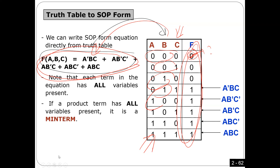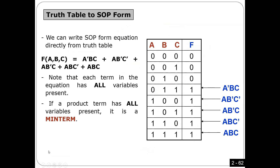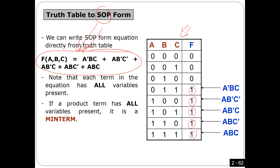Given a truth table, how can you create the equation? I explained two approaches. One approach is called sum of product. For every one in the truth table, you should have a term. So if you have five ones, you should have five terms here. This term is called min terms — that's what I explained last time.